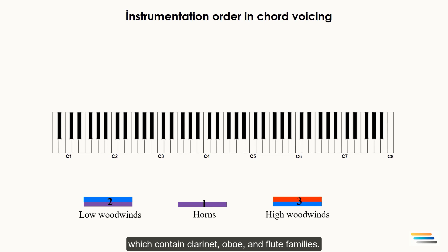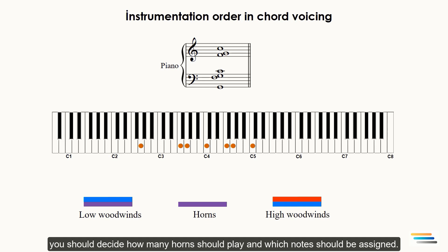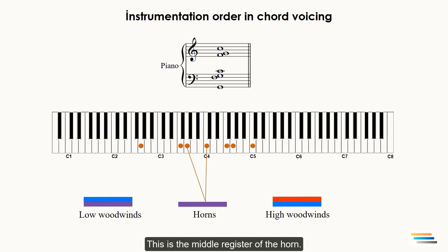So let's voice the first chord. The chord sounds like this. First of all, you should decide how many horns should play and which notes should be assigned. I want to give the G and the C to horns. This is a middle register of the horn.